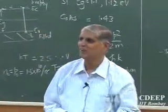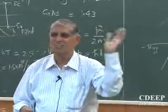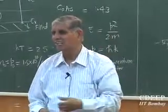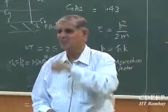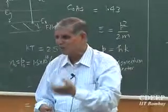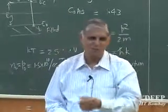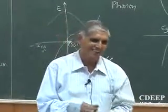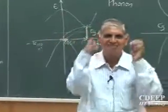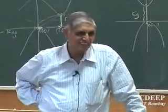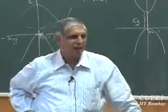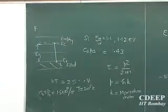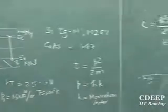I have interviewed many people across engineering institutions — IITs and others — and this question has fooled everyone. Think about why electrons can still populate the conduction band with only 25 meV of thermal energy available when 1100 meV is required. I'll give you half the answer; you think about the other half.